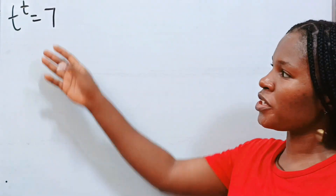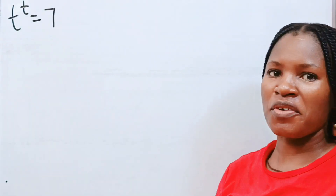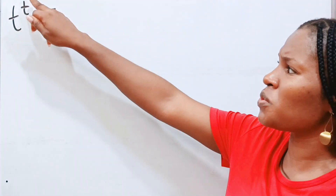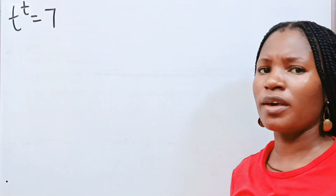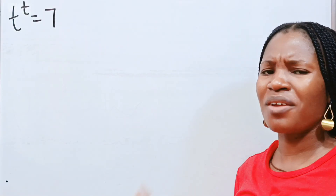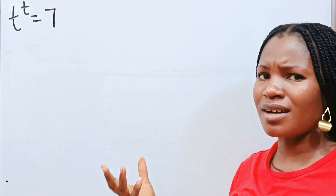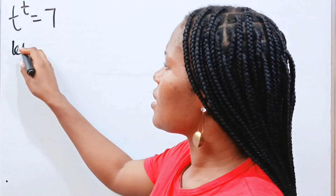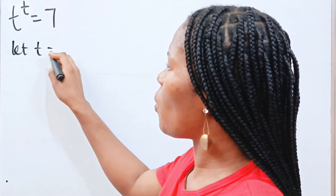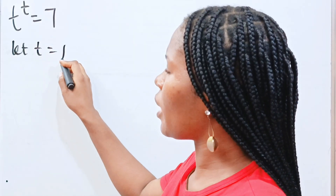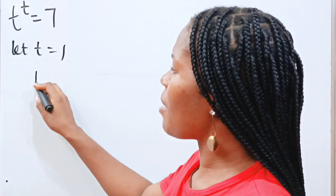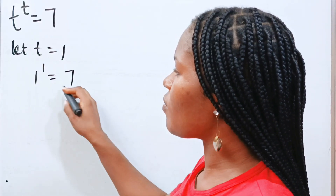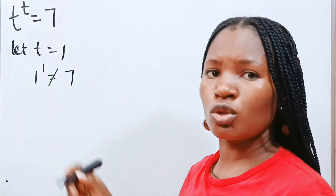When I saw this question, I said this is very reasonable. Looking at this, what raised to the power of itself will give us 7? You cannot actually say that. Because if you say, let t be equal to 1, that means 1 to the power of 1 is equal to 7. But this is not true.